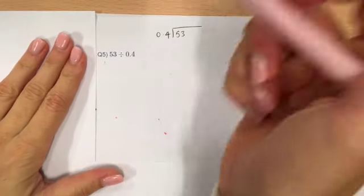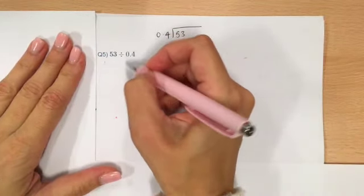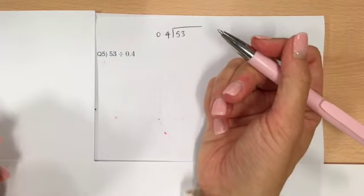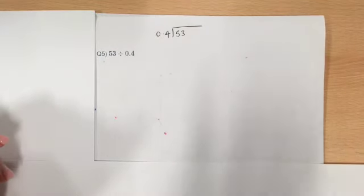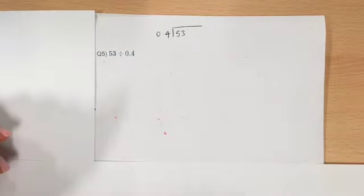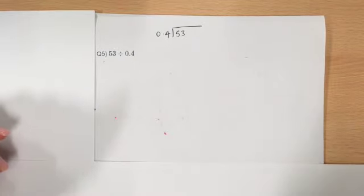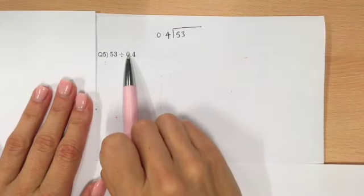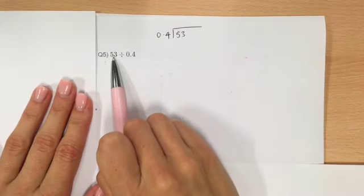So, how would we make that a whole number? Well, you would have to multiply it by something, and it's always going to be either multiply by 10, 100, or 1,000. But what you've got to remember is whatever you do to this one, you have to do to this one as well.